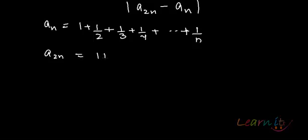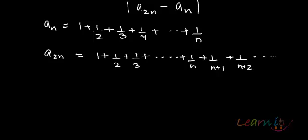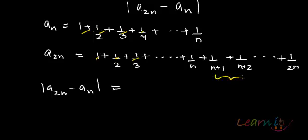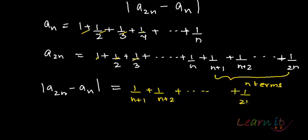So what would a_{2n} be? It will be 1 + 1/2 + 1/3 + ... + 1/n, but you also have n more terms: 1/(n+1) + 1/(n+2) + ... + 1/(n+n), that is 1/(2n). So the difference a_{2n} - a_n means all the first n terms cancel out, and what remains are these n terms: 1/(n+1) + 1/(n+2) + ... + 1/(2n).